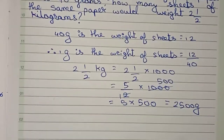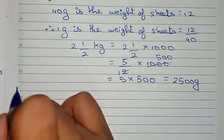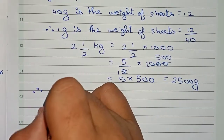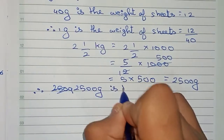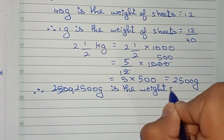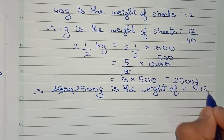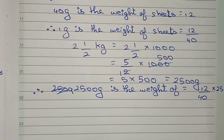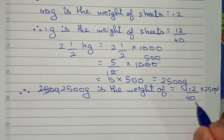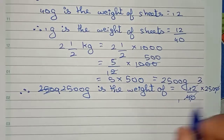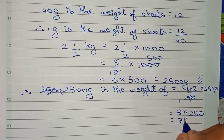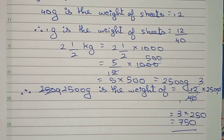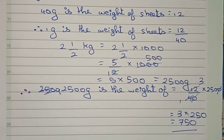So that means we have to find the number of pages that weigh 2500 grams. Therefore, 2500 grams is the weight of 12/40 into 2500 sheets. We cancel the zeros first, then cut 4 and 12 — that goes directly — so it becomes 3 into 250, which is 750. Therefore, 750 pages will weigh 2500 grams. This is our final answer. Thanks for watching and please subscribe my channel for more solutions.